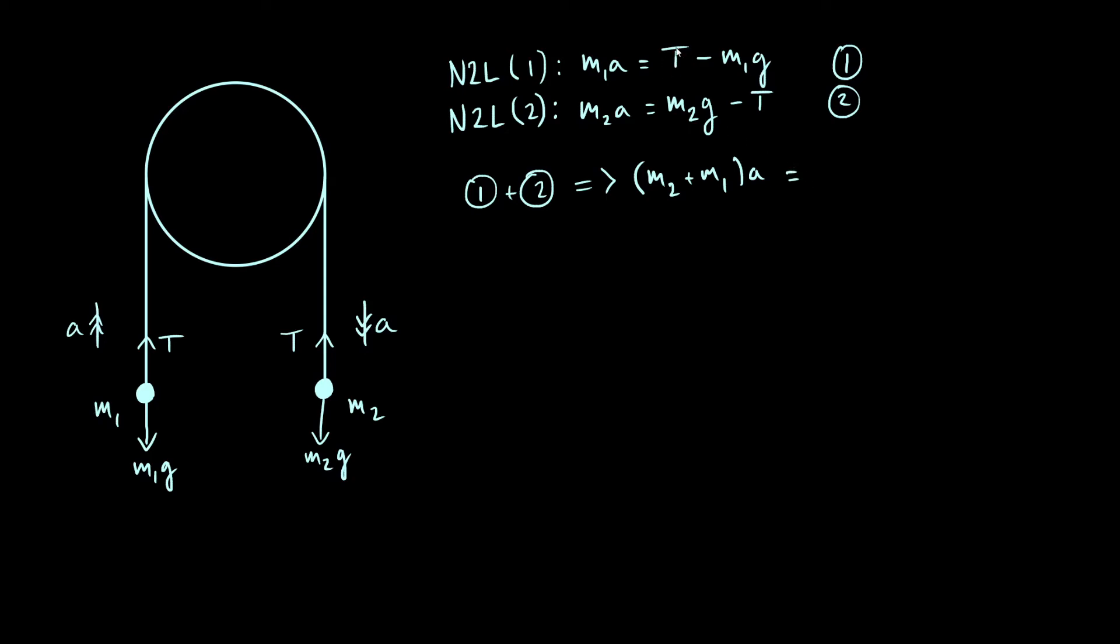So on the left-hand side, you're going to have M1A plus M2A, which we can factorise as M2 plus M1 times A, and on the right-hand side, you get T minus T, that cancels out, and then you get M2G minus M1G, which we can factorise as M2 minus M1 times G. So just rearrange this and we get acceleration A is M2 minus M1 over M2 plus M1 times G.